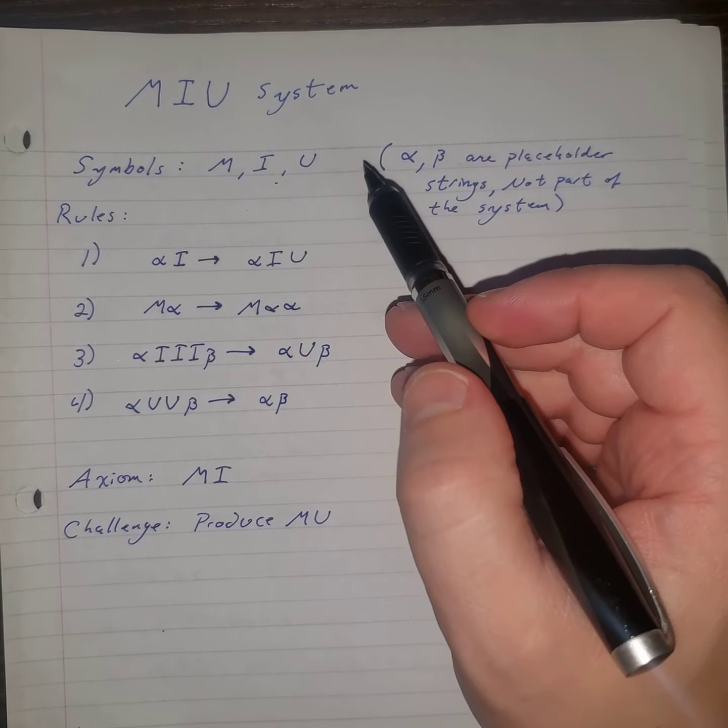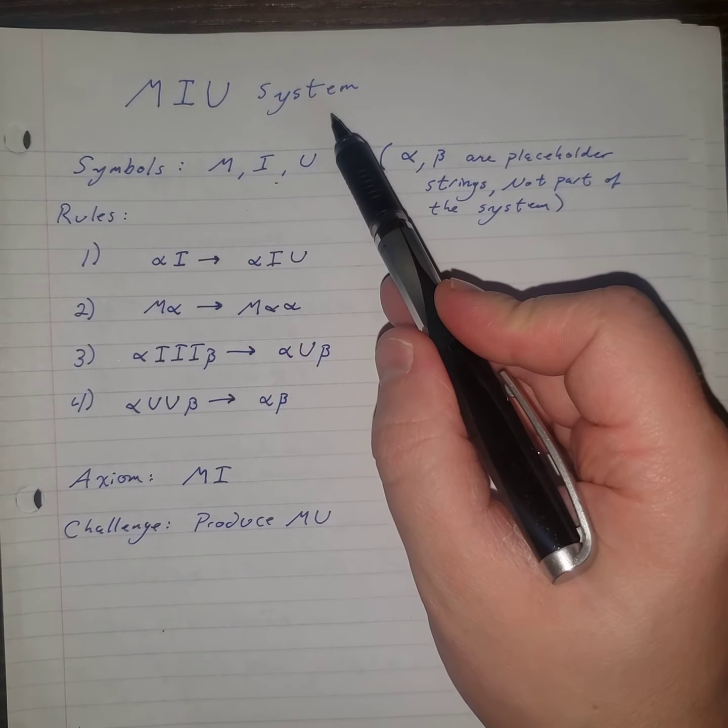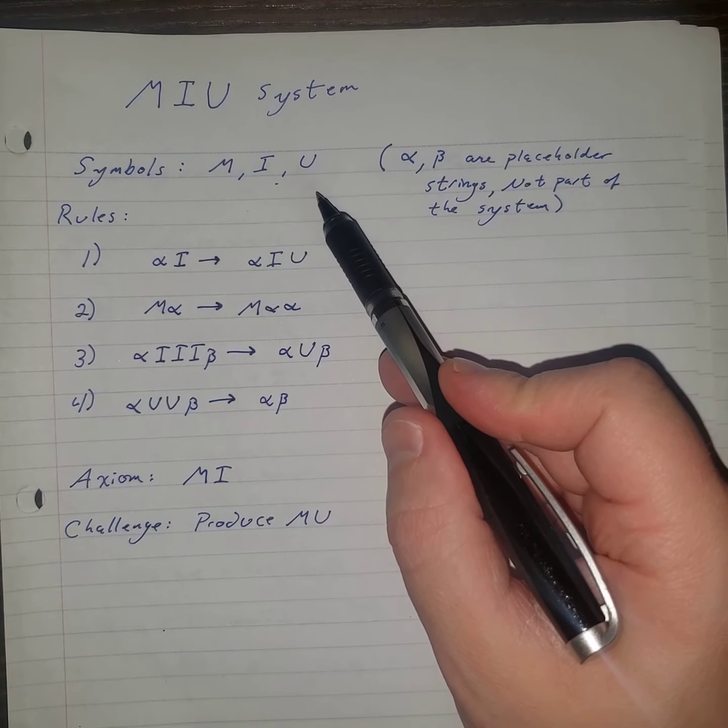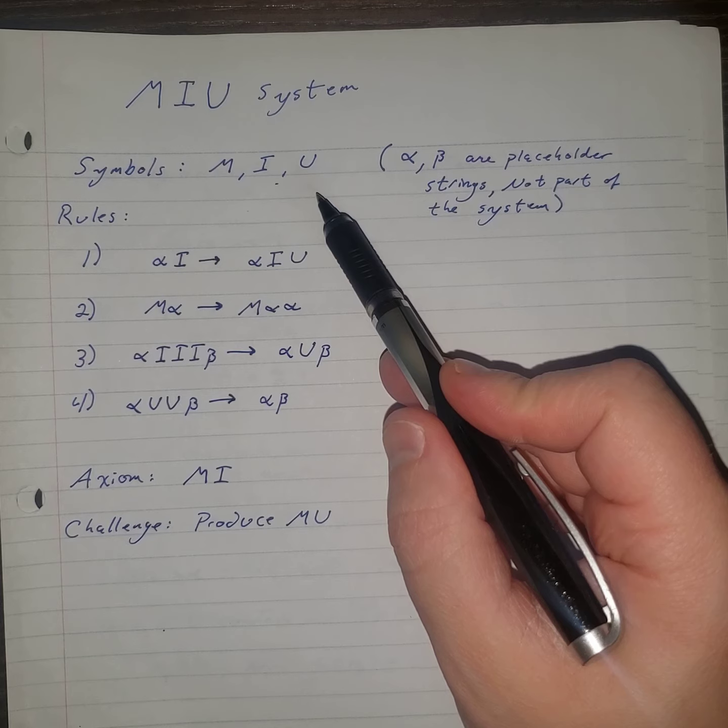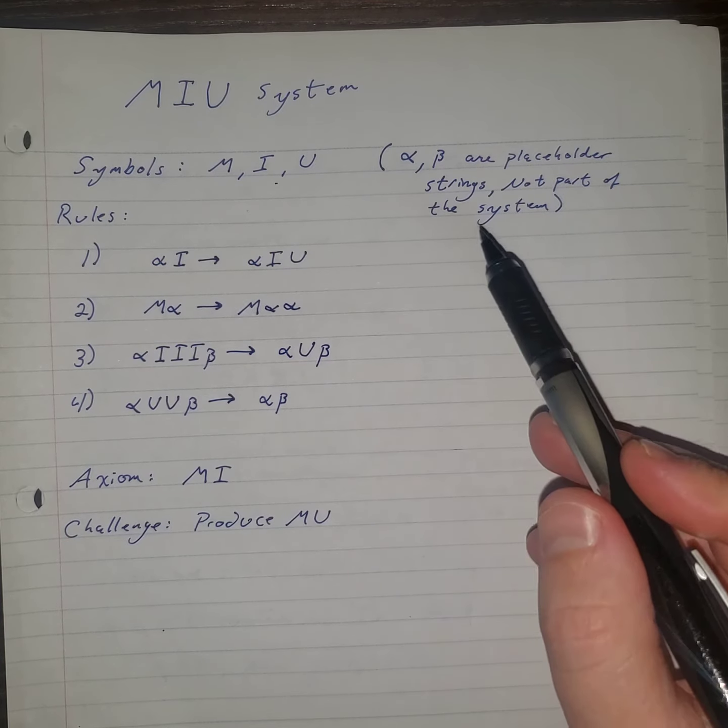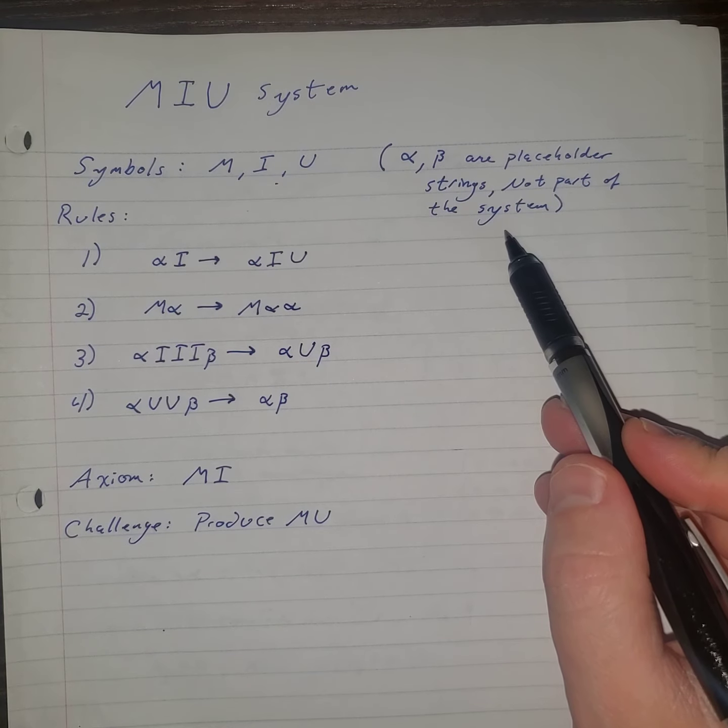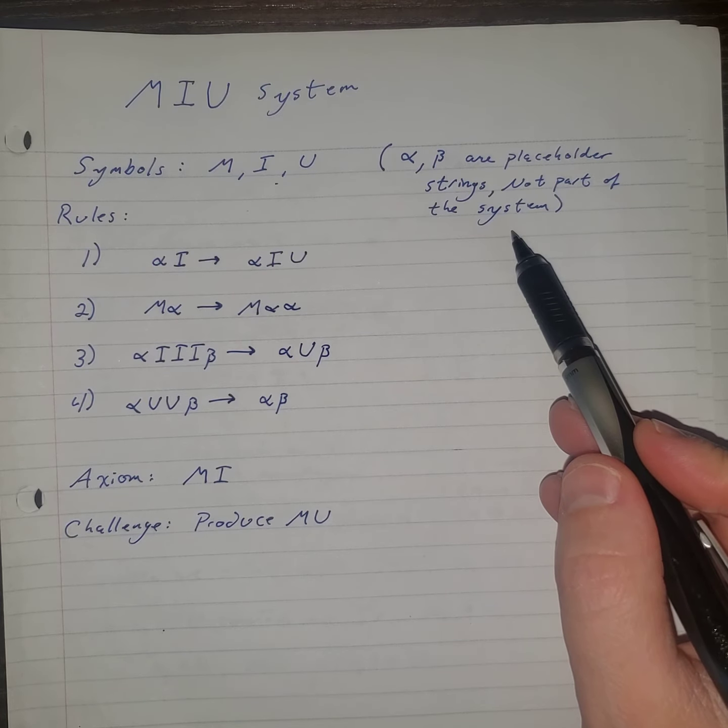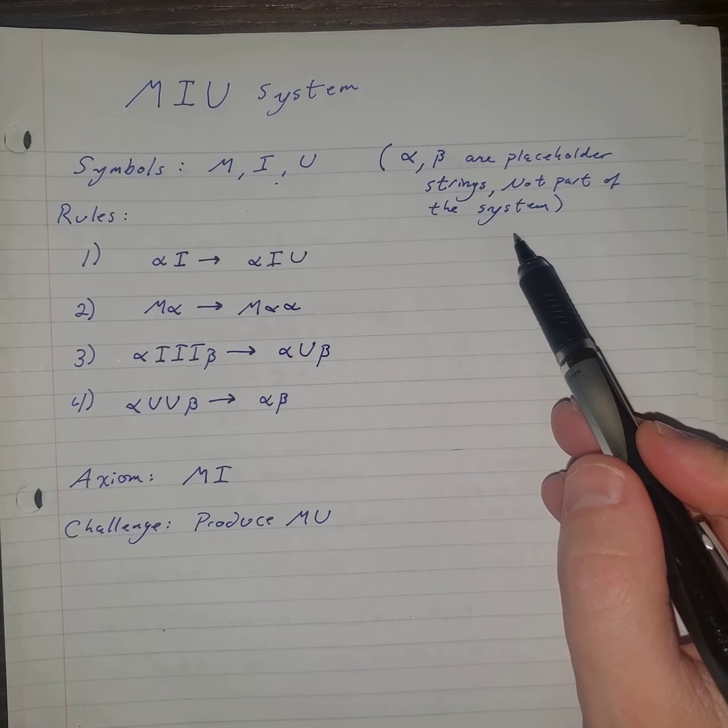In Douglas Hofstadter's book Godel Escher Bach, he invents the MIU system. The symbols of the MIU formal system are M, I, and U. If we make reference to alpha or beta, these are placeholder strings which may or may not be empty. They are not part of the system. They merely stand for strings of M's, I's, and U's which are part of the system.